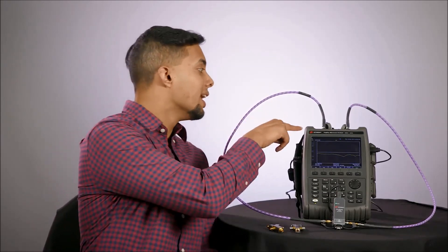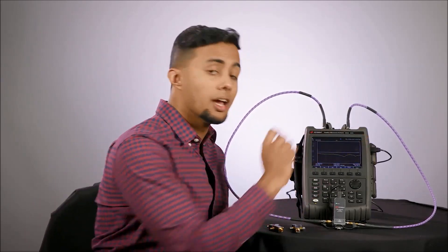So, for a full two port calibration with e-CAL, we simply connect the e-CAL module to ports one and two, and connect the USB cable to one of FieldFox's USB ports to provide power to the e-CAL module. Connection is that fast, and we are ready to set up the calibration.